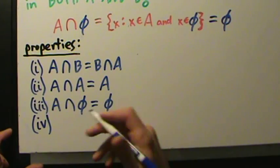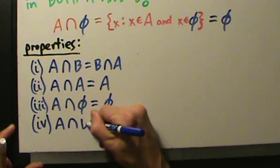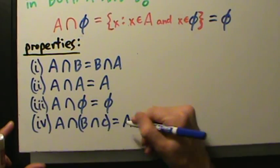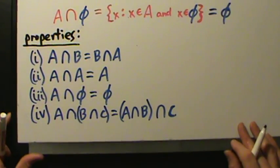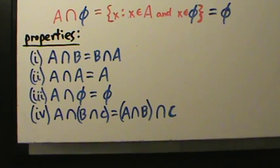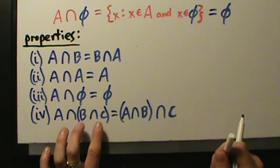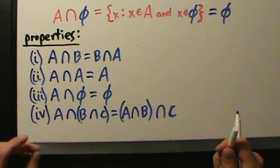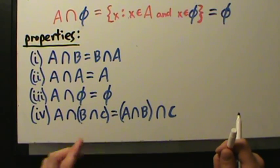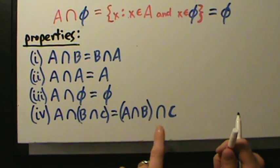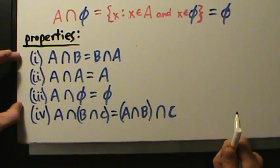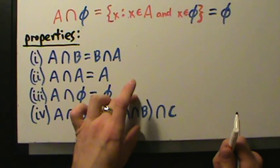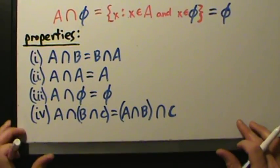Property 4 says A intersect (B intersect C) is the same thing as (A intersect B) intersect C. So if you want to intersect three sets, you can group two of them at a time and it doesn't matter how you group them. If you combine this with property 1, you can also flip them around. Properties 1 and 4 together tell you that you can intersect three sets in any order and group them two at a time any way you want.